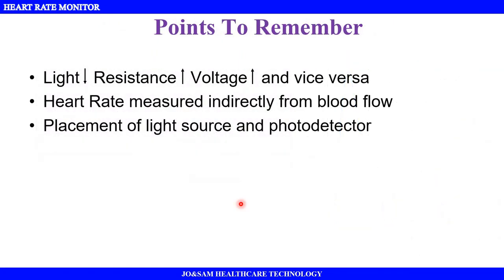To summarize the key points: when light decreases, the resistance and corresponding voltage value increase. When light increases, the resistance and voltage value decrease. Once the heart pumps blood, there will be blood flow from the arteries. We measure the blood flow through the fingertip. The photoresistor varies, causing the resistance value and voltage value to change, giving us the heart rate signal.